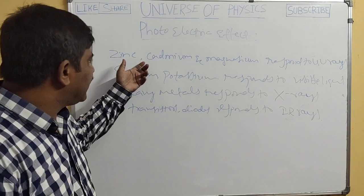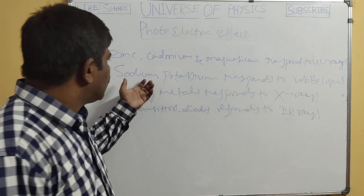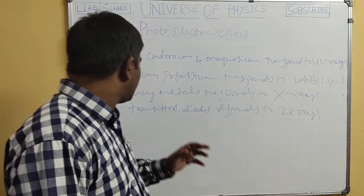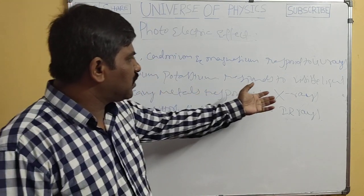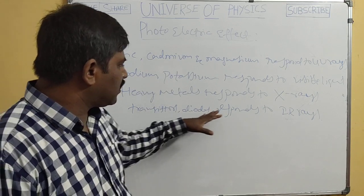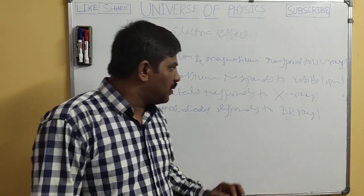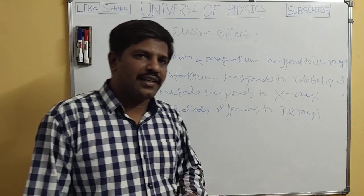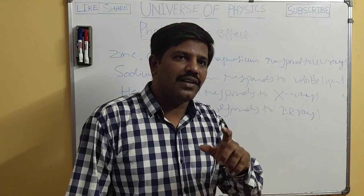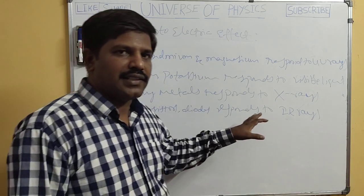From all these examples it is clear that different substances respond photoelectrically for different frequencies of incident electromagnetic radiation. Zinc, cadmium, and magnesium respond to UV rays; sodium and potassium respond to visible light; some heavy metals respond to X-rays; and some semiconductor devices like transistors and diodes respond to infrared rays.